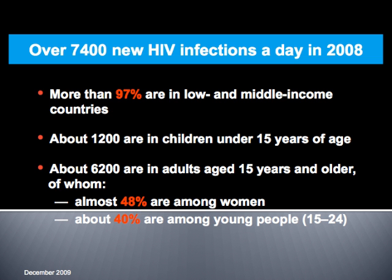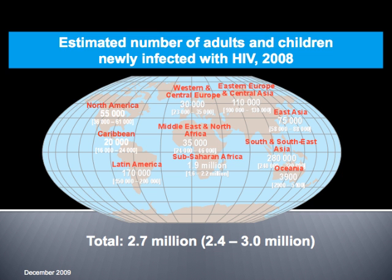What's the main cause for children? That's coming on the next slide. This is the estimated number of adults and children newly infected — only in 2008. You can read: 55,000 in North America, as compared to sub-Saharan Africa with 2 million in one year. So we had 2 million new cases in that part of the world in 2008 alone, compared to 170,000 in Latin America. The lowest incidence is in East Asia at about 75,000. Total we had 2.7 million in 2008.